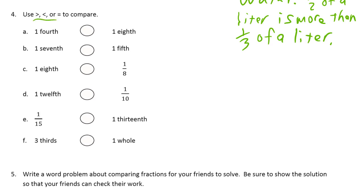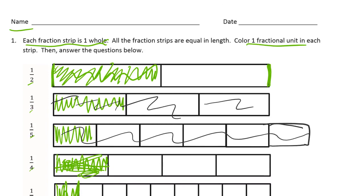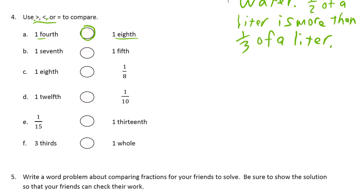Use less than, greater than, or equal to to compare. That's what we're going to write in these circles. One-fourth, and we'll assume that these are all fractions of the same whole. So it's one-fourth of the same thing that this one-eighth is. There's no units for these. We'll just assume they're fractions of the same whole, so we can compare them. One-fourth and one-eighth. Remember that rule from the first page that smaller denominators means larger units. So one-fourth is going to be greater than an eighth.